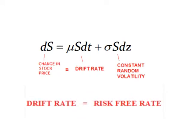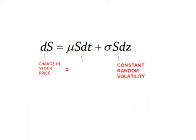Remember that the no riskless arbitrage argument shows us that this fixed drift rate must be equal to the risk-free rate. So the change in stock price equals continuous growth over a certain length of time that equals the rate of a government bond, plus the volatility of people randomly buying and selling the stock over that time.